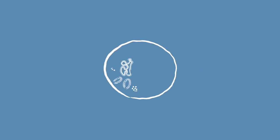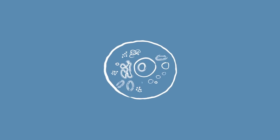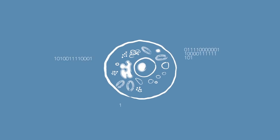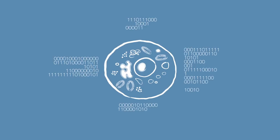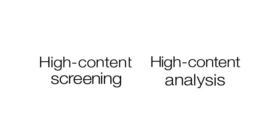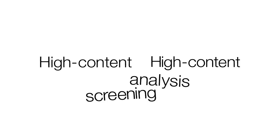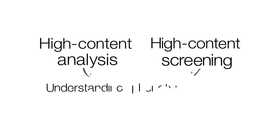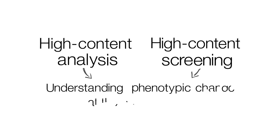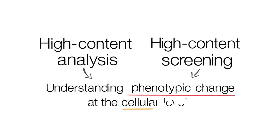In parallel or as a separate step, image analysis software is used to examine and measure cellular changes. High content screening or analysis is used interchangeably and continues to evolve as a technology that advances understanding of phenotypic change at the cellular level.